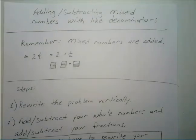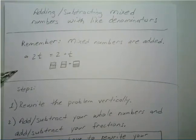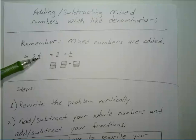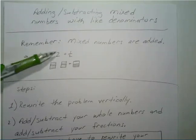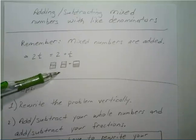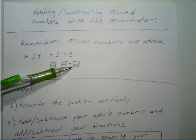Hello everyone. In this video we will be looking at how to add and subtract mixed numbers when they have the same denominator. Remember, this is something important: mixed numbers are just two values added together. Two and one-half is really just two plus one-half, so visually it's one whole shaded section plus half a shaded section.